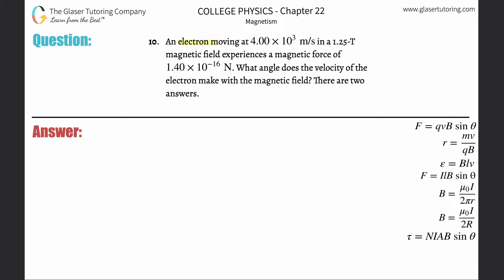Number 10: an electron moving at 4.00 × 10³ m/s in a 1.25 Tesla magnetic field experiences a magnetic force of 1.40 × 10⁻¹⁶ Newtons. What angle does the velocity of the electron make with the magnetic field? There are two answers.